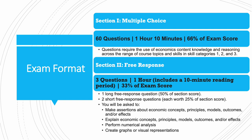The exam format has two sections. The multiple choice section has 60 questions, you have one hour and 10 minutes — that's 70 minutes — and it's 66% of the exam score, or two thirds. Questions require you to use economic content, knowledge, and reasoning across the range of course topics and skills in skill categories one, two, and three. The free response section has three questions, you have one hour including 10 minutes of reading time, and it's 33% of your exam score — one third. It starts with one long free response question, which almost always includes graphing, worth 50% of that section score, followed by two short free response questions each worth 25% of the section score.